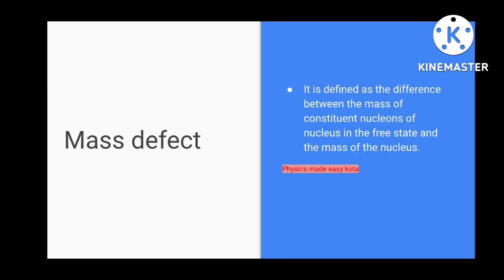Nucleus consists of protons and neutrons. Neutrons and protons together are known as the nucleons. But there is a difference between the mass of these nucleons which are present in the nucleus and the complete mass of the nucleus. This difference in mass is known as the mass defect.